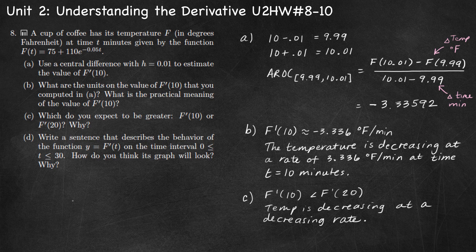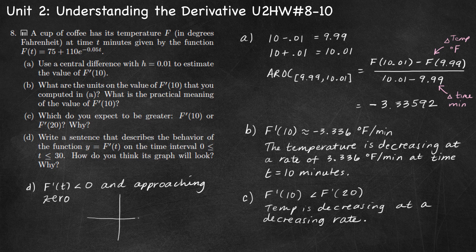Part D: write a sentence that describes the behavior of the function y equals f prime of t on the time interval from zero to 30. F prime of t is negative and approaching zero. The original function f is decreasing at a decreasing rate, so the derivative is going to be negative and getting closer and closer to zero. I'd estimate the derivative graph to look like a negative curve approaching zero.